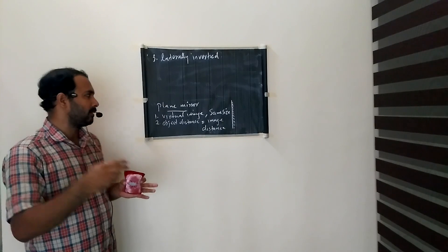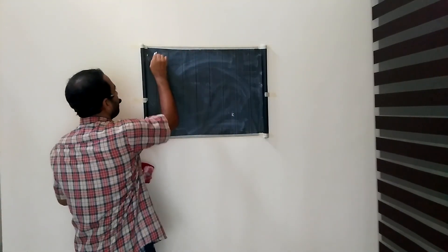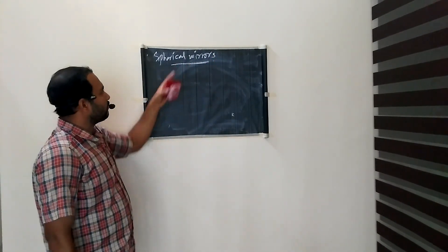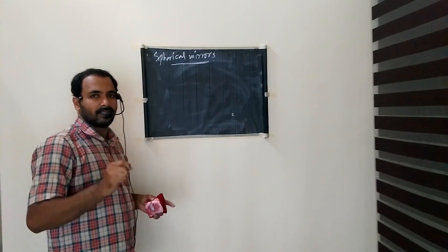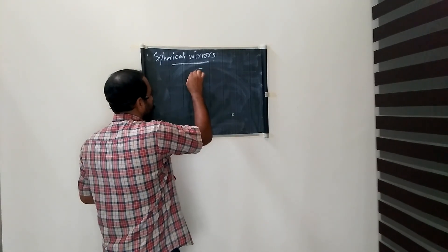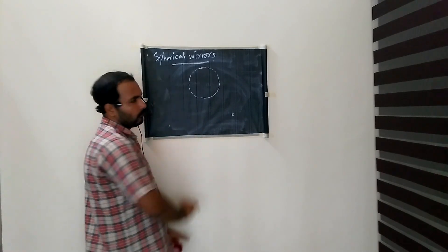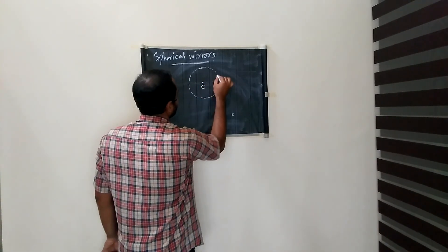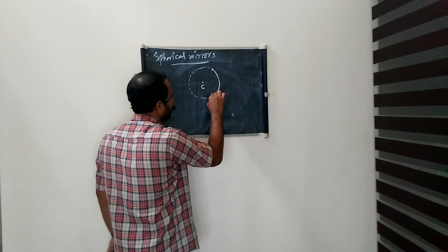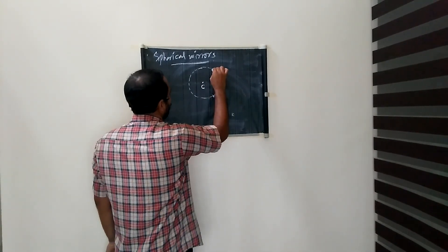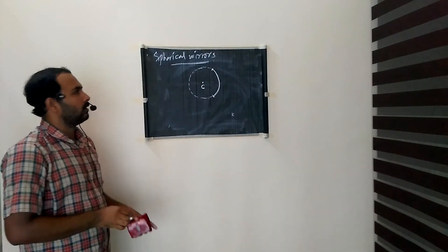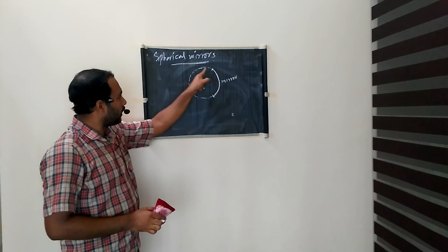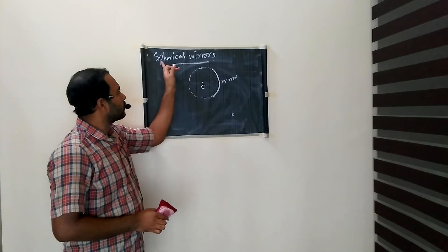We have to discuss some more types of mirrors. Such mirrors are called spherical mirrors. If a mirror is part of a sphere, it is called a spherical mirror. A sphere has a centre, denoted by the letter C.